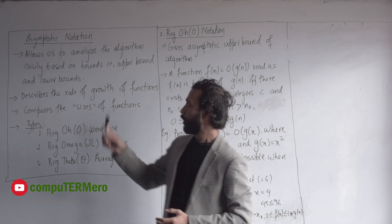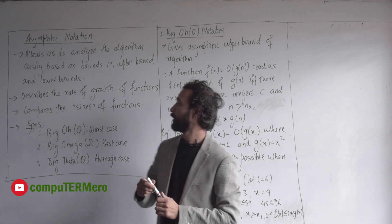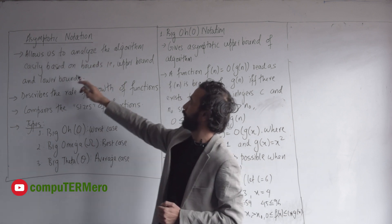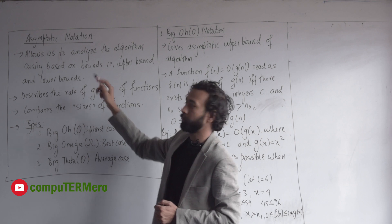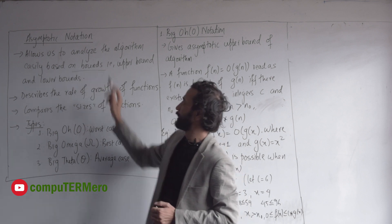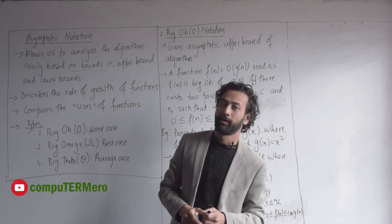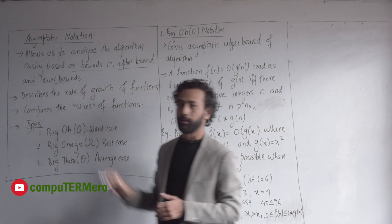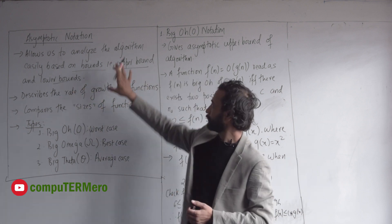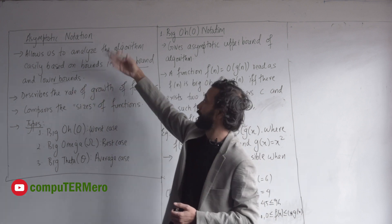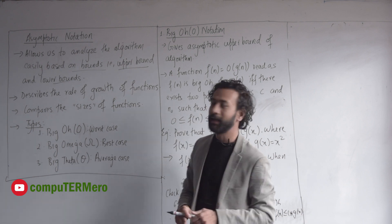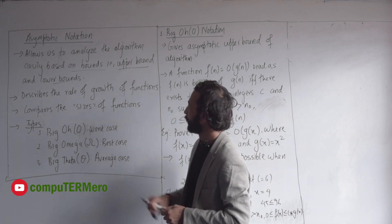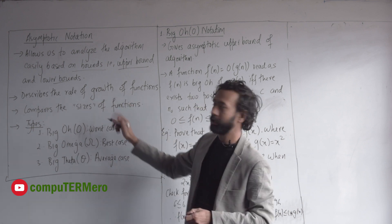What is asymptotic notation? It allows us to analyze the algorithm easily based on bounds. It describes the rate of growth function.